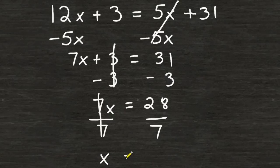And on the right hand side of our equation, we have 28 divided by 7 which is 4. So now we know that x must be equal to 4.